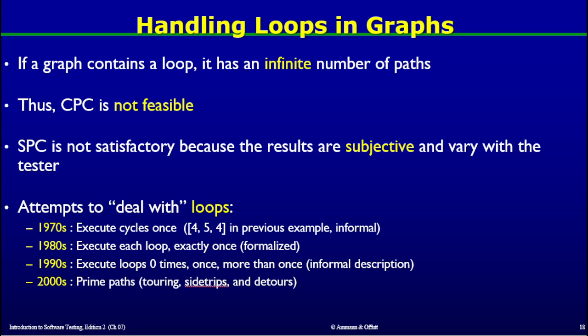As shown in the previous example, covering loops is impossible when it comes to complete path coverage, because loops give rise to an infinite number of paths. But we definitely have to deal with programs that have loops. Complete path coverage is not feasible, and specified path coverage is not satisfactory because the results are subjective. So there have been attempts to deal with loops in a more principled way.